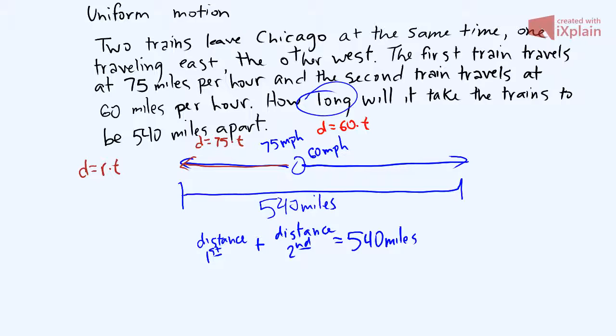So we plug in what we know. The first train is 75t plus our 60t, and that equals 540 miles. Okay, we combine our like terms. 75 and 60 is 135, so 135t equals 540.